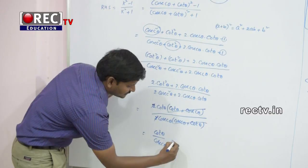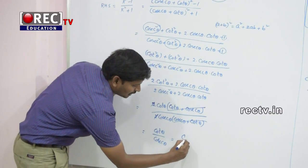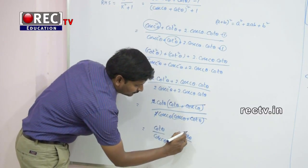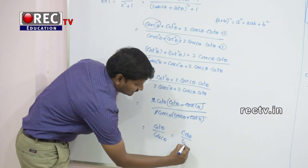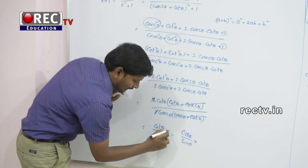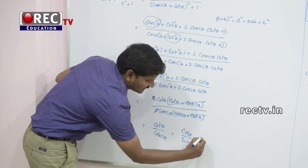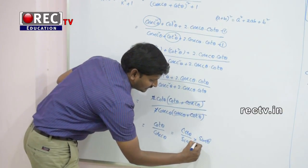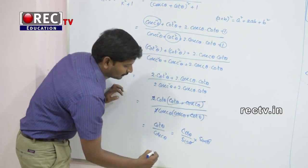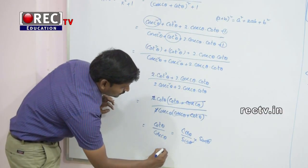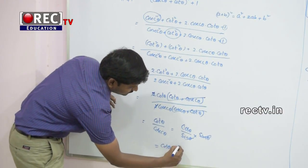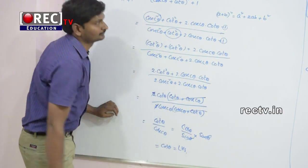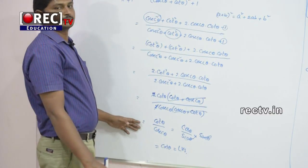So, cotθ / cosecθ = (cosθ / sinθ) × sinθ = cosθ. The sinθ terms cancel, giving cosθ, which equals LHS. Hence proved.